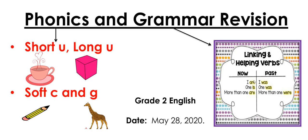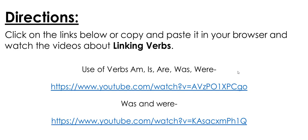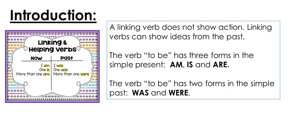In grammar we are revising helping verbs and linking verbs — the verbs you can see in this picture: am, is, are, was, and were. By the end of this lesson you're going to be able to say: I can identify the linking verbs am, is, are, was, were in sentences, and I can write sentences using linking verbs. You can go and watch the two videos linked in the description below, and then come back to continue. A linking verb does not show any action.